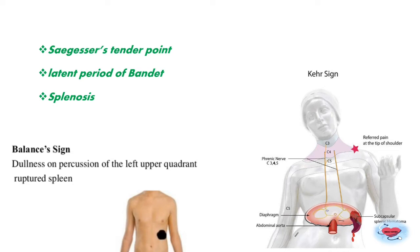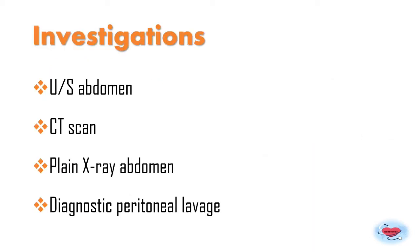Investigations include ultrasonography, complete hemogram, and CT scan to determine the type of injury. Plain X-ray abdomen may reveal obliteration of the splenic outline, fracture of lower ribs, or other causes of splenic rupture.